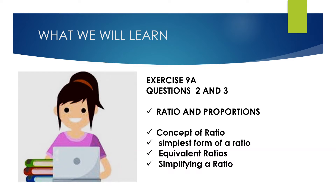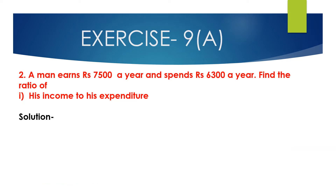Now we will solve question number 2. A man earns 7500 rupees a year and spends 6300 rupees a year. Find the ratio of his income to his expenditure. His income is 7500 rupees and his expenditure is 6300 rupees.